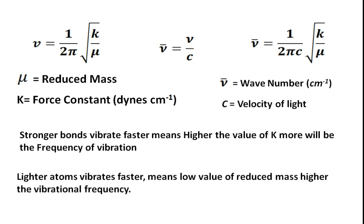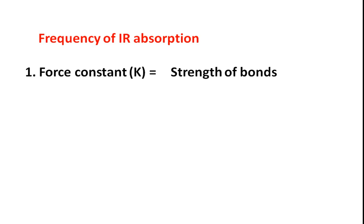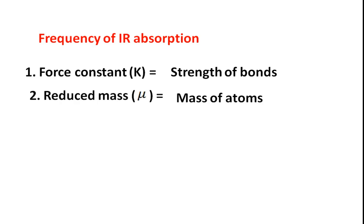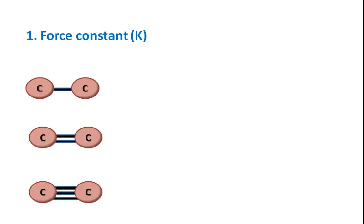So to calculate any vibration frequency, we require two things. The frequency of IR absorption depends on: first, the force constant, which depends on the strength of the bond; and second, the reduced mass, which depends on the mass of the atoms. Let's take examples to understand how both of these factors vary the IR absorption frequencies.